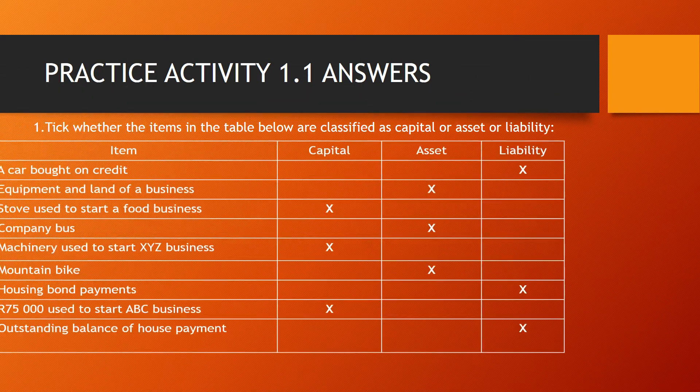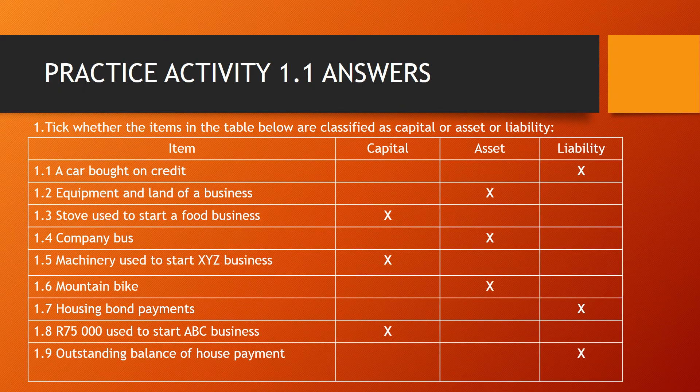Before we get started with today's video, we are quickly going to go through the answers of Practice Activity 1.1 from the previous EMS video. 1.1 — a car bought on credit is a liability. 1.2 — equipment and land of a business is an asset. 1.3 — staff used to start a food business is capital. 1.4 — a company bus is an asset. 1.5 — money used to start XYZ business is capital. 1.6 — a mountain bike is an asset. 1.7 — housing bond payments are a liability. 1.8 — 75,000 used to start ABC business is capital, and 1.9 — outstanding balance of a house payment is a liability.